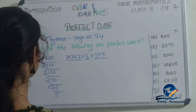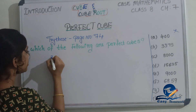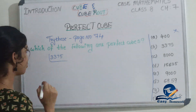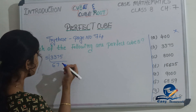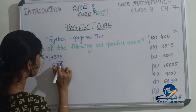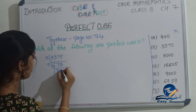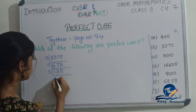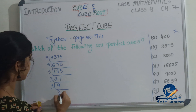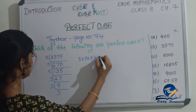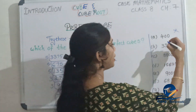Let's move to the next number: 3375. The prime factorization gives us: 3375 = 5 × 5 × 5 × 3 × 3 × 3. When we group these into triplets — 5 × 5 × 5 and 3 × 3 × 3 — we get complete groups of three. So 3375 is a Perfect Cube. Clear?